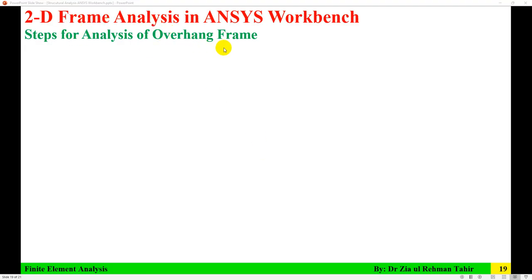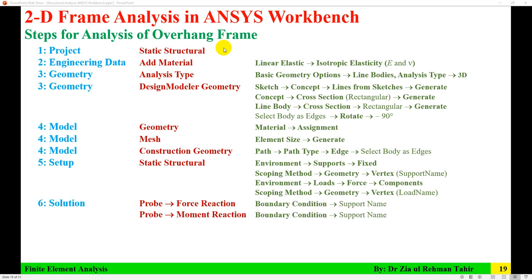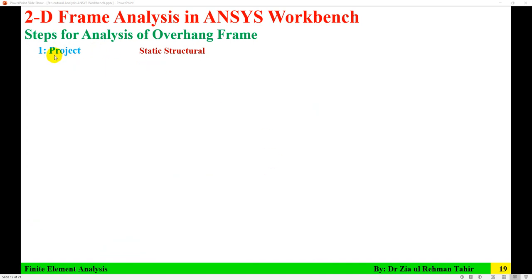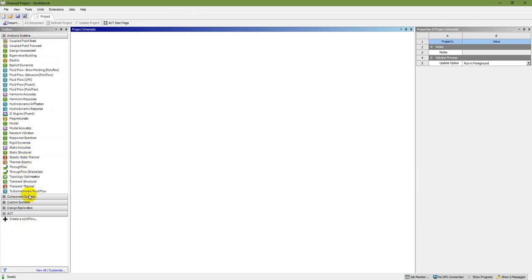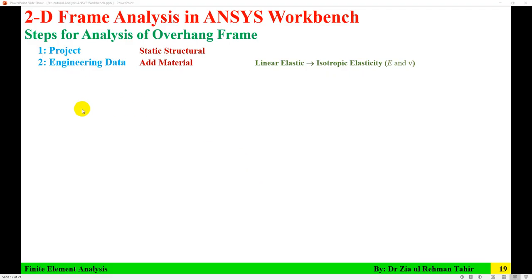The steps for analysis of this frame in ANSYS Workbench are: Step 1 — Project; Step 2 — Engineering Data; Step 3 — Geometry; Step 4 — Model; Step 5 — Setup; Step 6 — Solution and Solve; Step 7 — Results. I'll explain each step one by one. The first step is to start a static structural project in ANSYS Workbench, and you need to save the project before starting the next step.